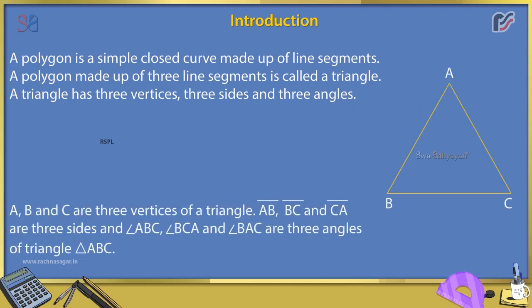A, B, and C are three vertices of a triangle. AB, BC, and CA are three sides, and angle A, angle B, and angle C are three angles of triangle ABC.